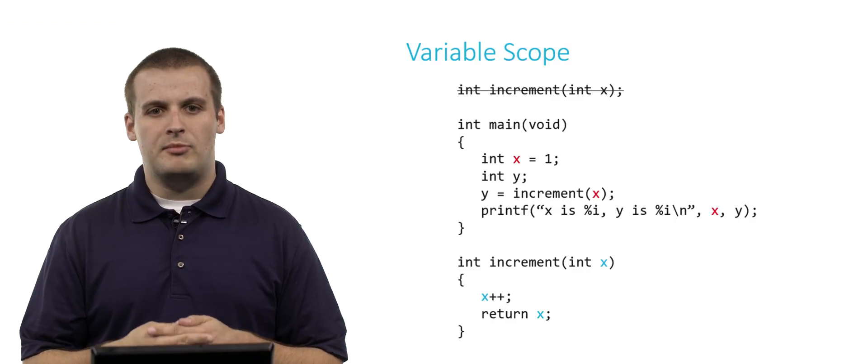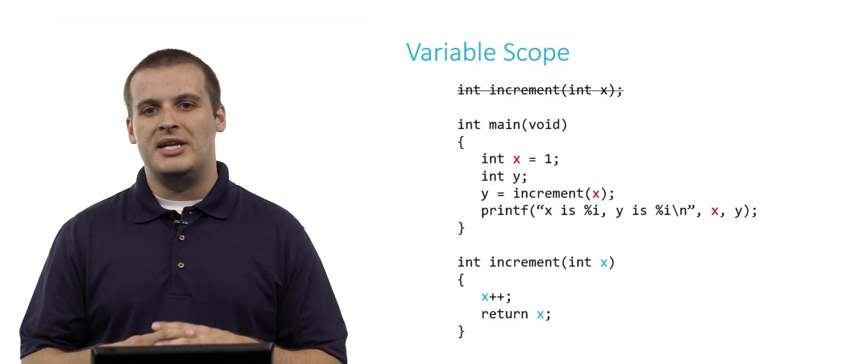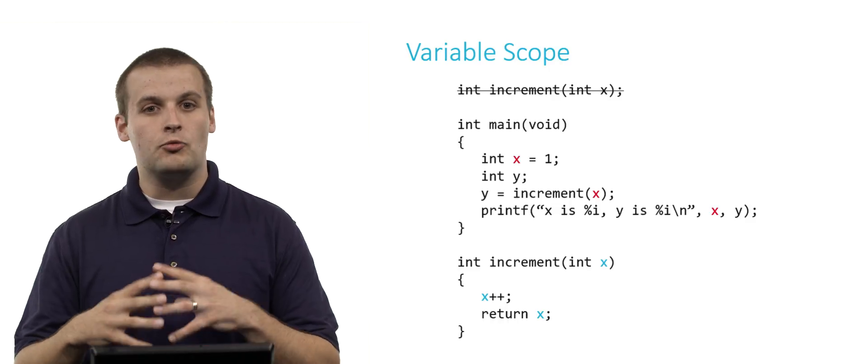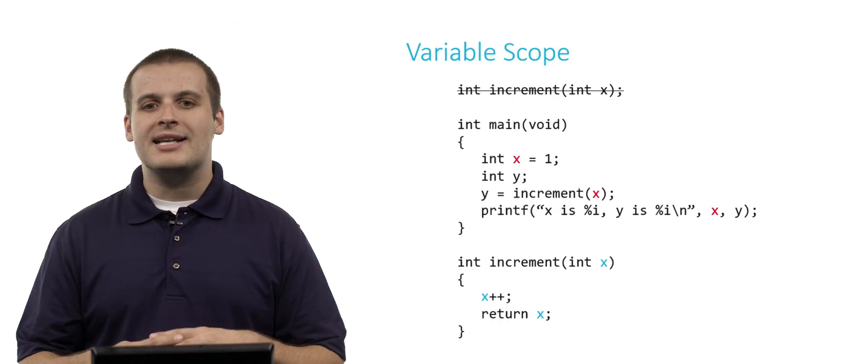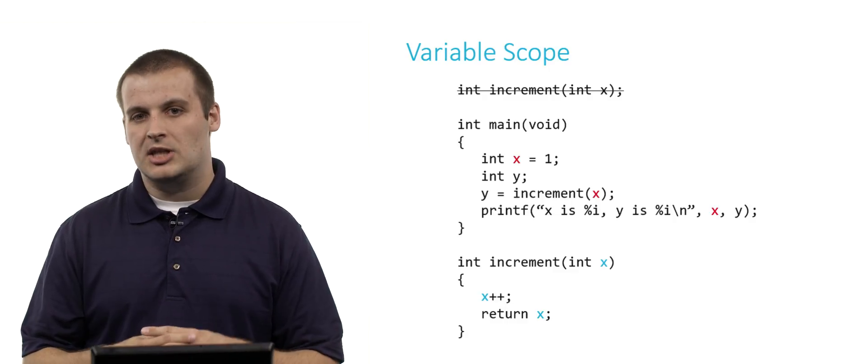Notice in that third line of main, y equals increment x, that increment is not being passed main's x or the red x. It's getting passed a copy of it. And it's only going to work with that copy of it, the blue x.